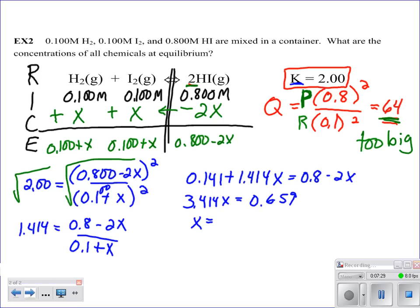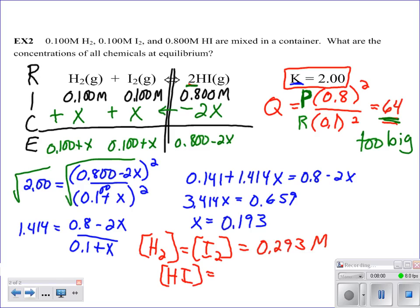So what you should ultimately come up with is x equals 0.193. So make sure you can do that math. And that means that our hydrogen and our iodine concentrations are equal to 0.1 plus 0.193, so that's going to be equal to 0.293 molar. And our hydroiodic acid concentration is going to be equal to 0.8 minus 2 times 0.193, which gives us 0.414 molar. And you are done with equilibrium calculations.